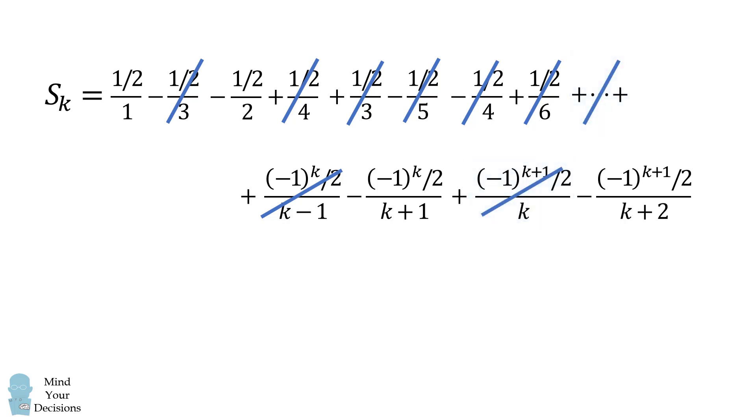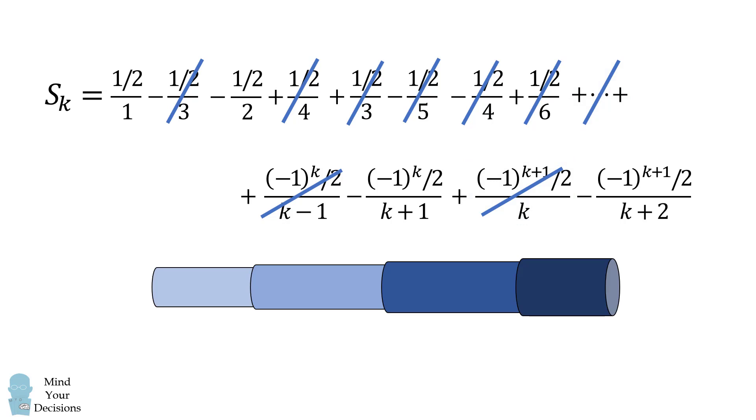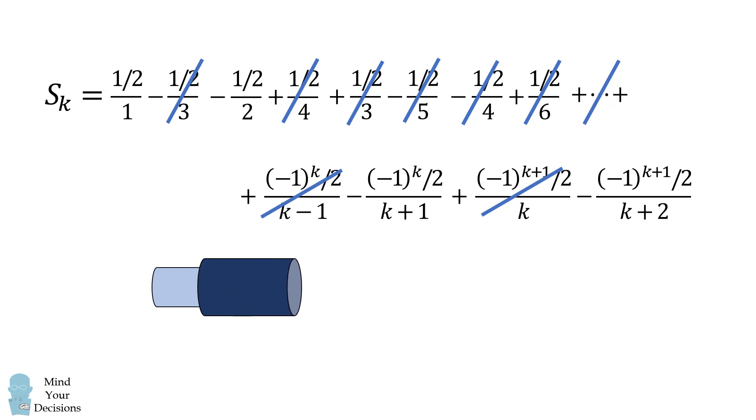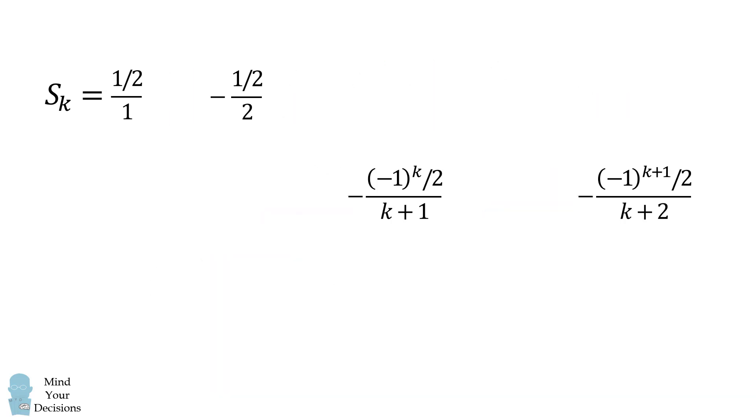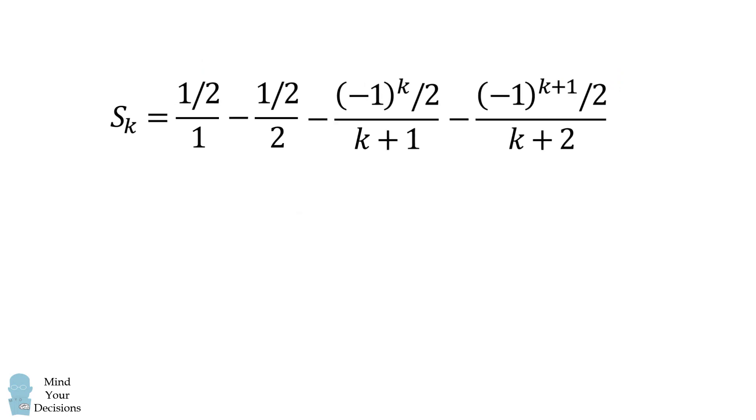This type of series, where we have only the very beginning and the very end survive, is known as the telescoping series. And it's similar to how the tubes of a retracting telescope will collapse upon themselves. So all of these terms will vanish, and just these four terms will remain.